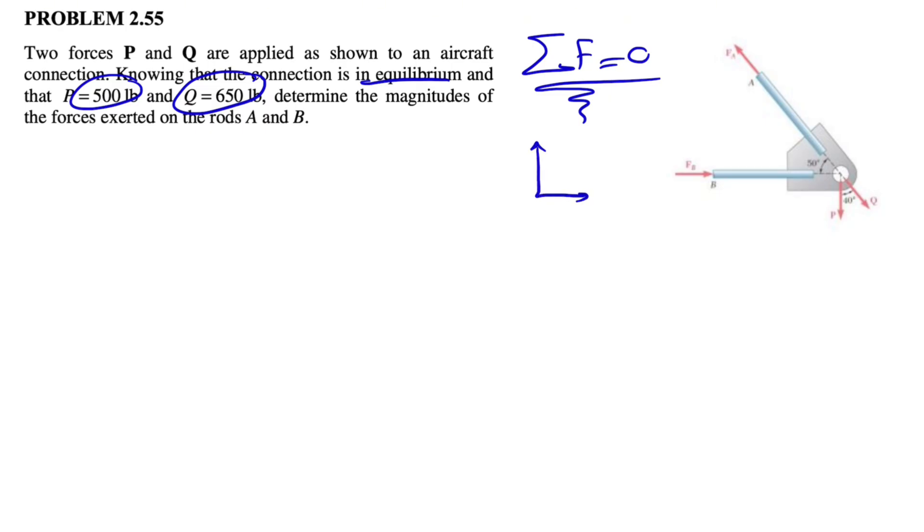So let's call our X and Y in here like this. And if we do that, we can do sum of all forces in X direction equals zero and sum of all forces in Y is equal to zero. So two equations, we should be able to find all the unknowns that we have in here.